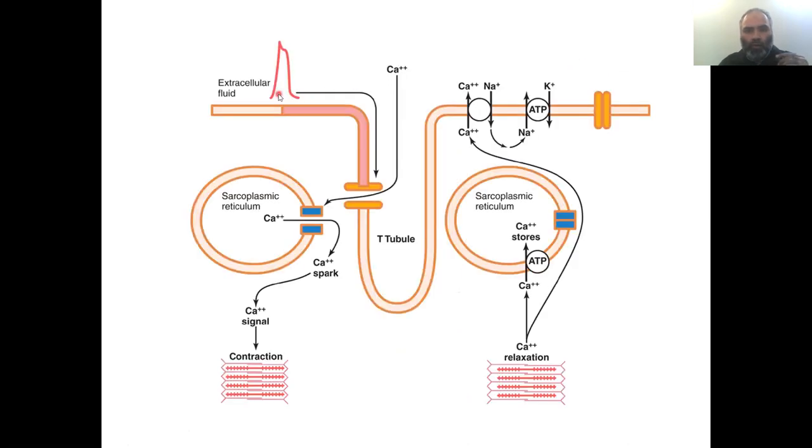What happens is, action potential took place and you had calcium coming into the cell. This is the T-tubule. This is the same T-tubule and sarcoplasmic interaction that you studied in neuromuscular junction. I beg your pardon, in nerve, where you mention excitation-contraction coupling.